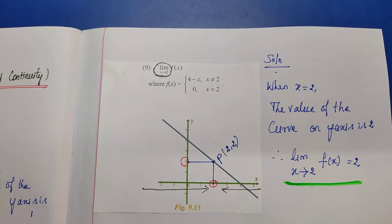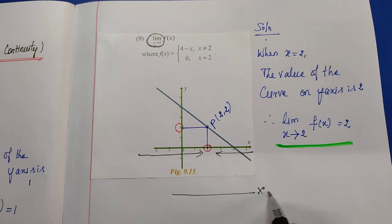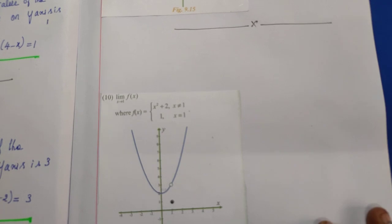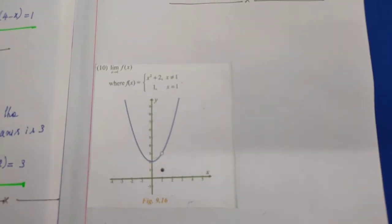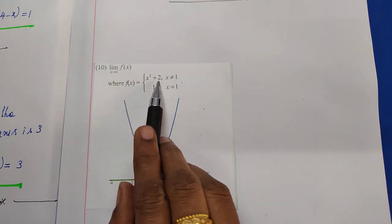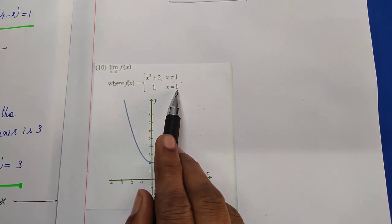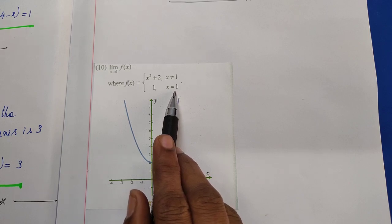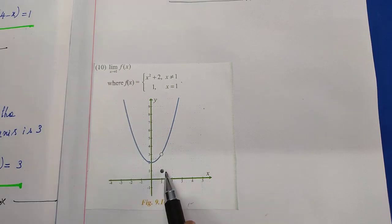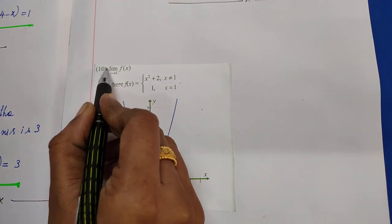Question number 9 is over. Now question number 10. The question is: limit x tends to 1 of f(x), where f(x) equals (x squared plus 2) when x is not equal to 1, and f(x) equals 1 when x equals 1. We estimate the limit value of this function using the graph given below. Here our limit is x tends to 1.